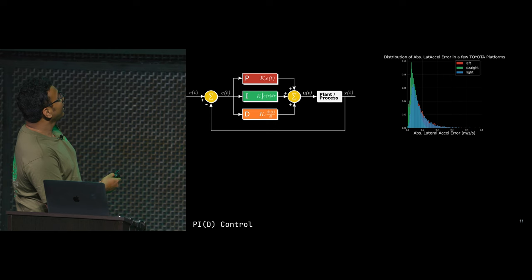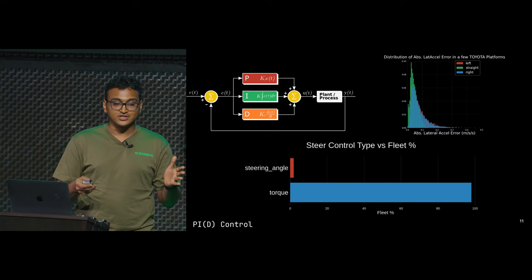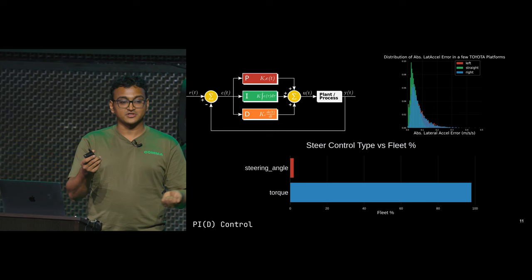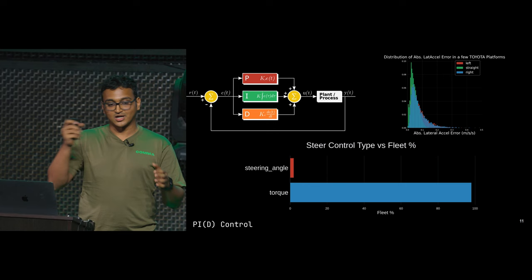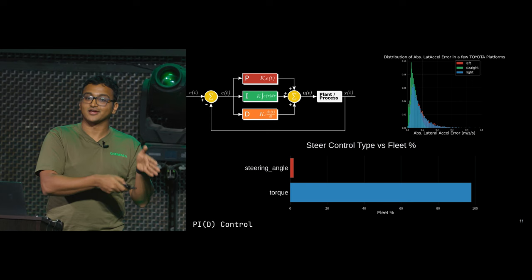We then realized that in our fleet, the way we actually give instructions to cars, we don't actually give the steering angle. For overwhelmingly most of our cars, we give the steering torque that you have to apply to the car. So we realized we were going the whole roundabout way: we have the curvature, do all these equations, find the steering angle, close the loop on the steering angle, and then finally send torque. We can just circumvent that and try to find torque directly.